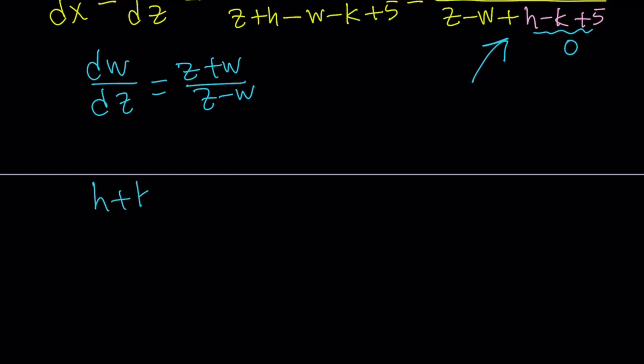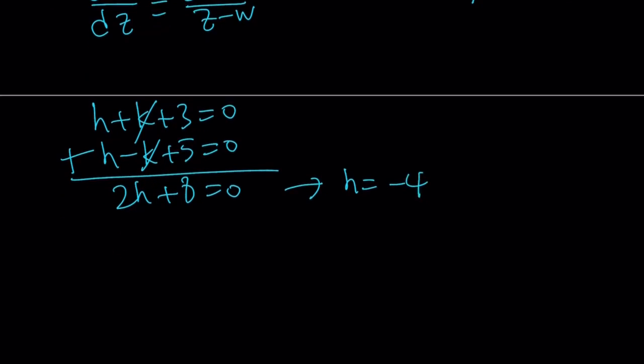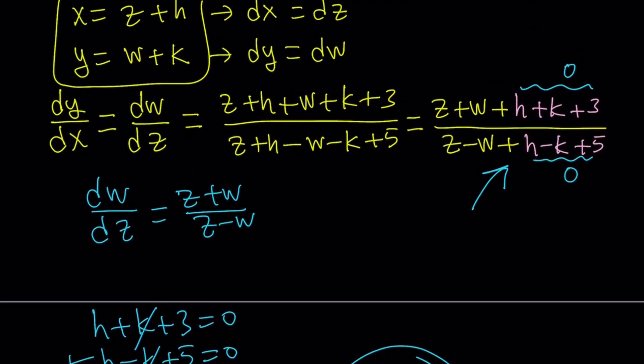So, h plus k plus 3 equals 0, and h minus k plus 5 equals 0. You can go ahead and add these up. k cancels out. 2h plus 8 equals 0. This means h is equal to negative 4. And if you plug in h into one of these equations, you get k equals 1.